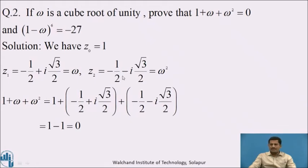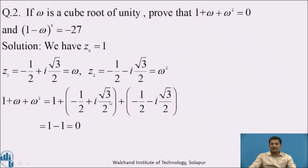Adding the three roots: 1 + ω + ω² = 1 + (−1/2 + i√3/2) + (−1/2 − i√3/2). The imaginary terms +i√3/2 and −i√3/2 cancel. We get 1 − 1/2 − 1/2 = 1 − 1 = 0. Hence 1 + ω + ω² = 0 is proved.